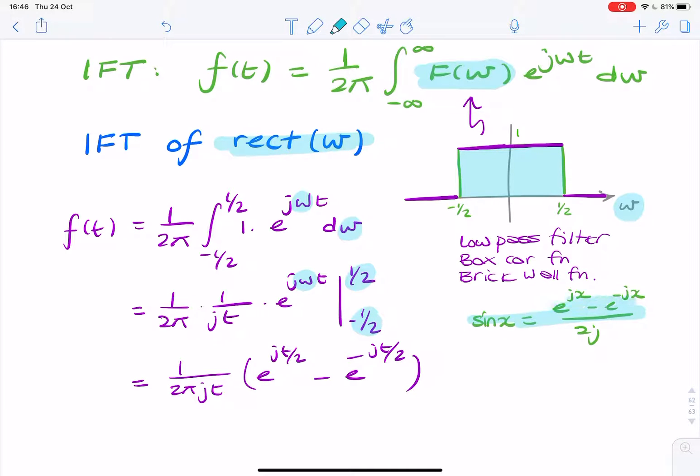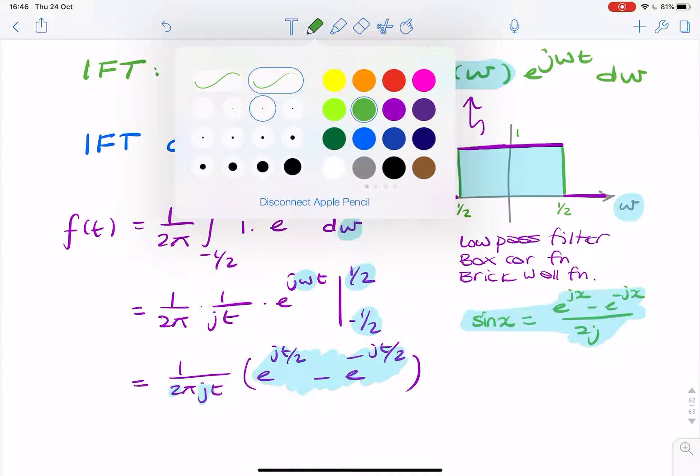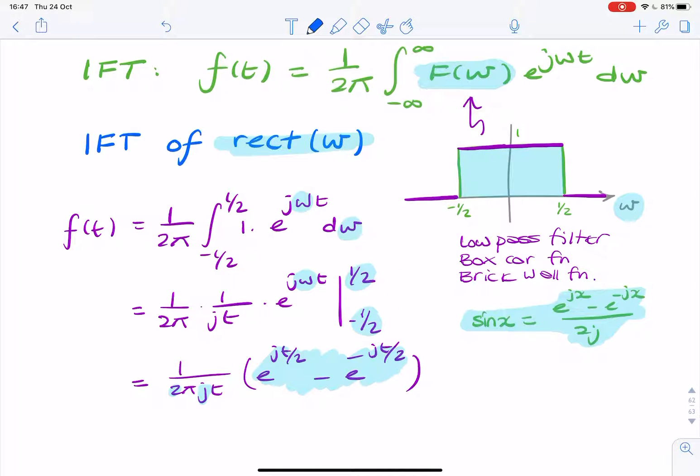So that's Euler's definition of sin. And what we have here looks very similar to that. We've even got the 2j in the denominator. So we're just about ready to turn that into a sinc function.